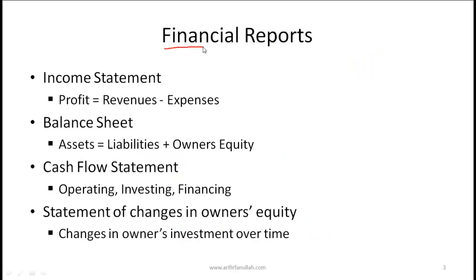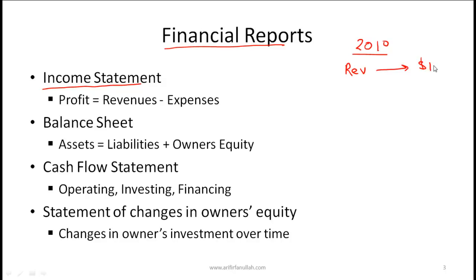What are the major financial reports? We'll touch on these here and cover them in more detail later. The income statement basically tells you how a company has performed over a given period. For example, an income statement for 2010 will show the top line — how much revenue the company made — then a whole bunch of expenses and taxes, and at the end, a profit. Profit is basically revenue minus expenses for the year.